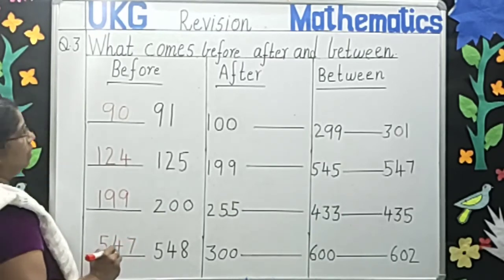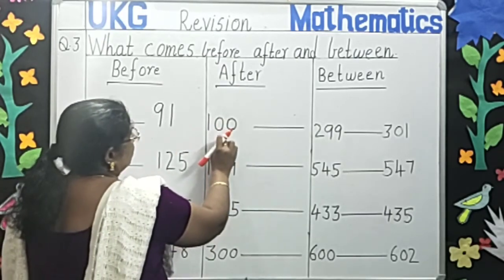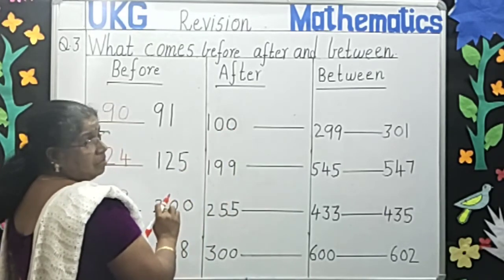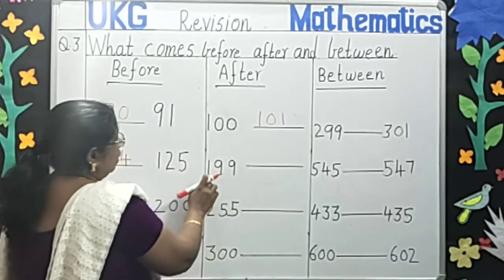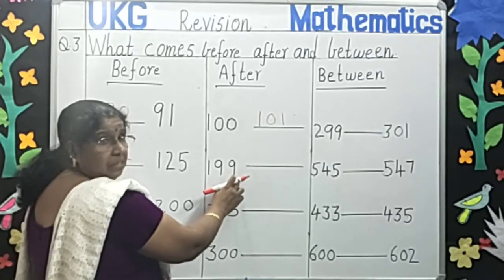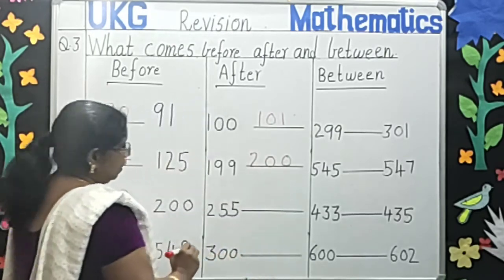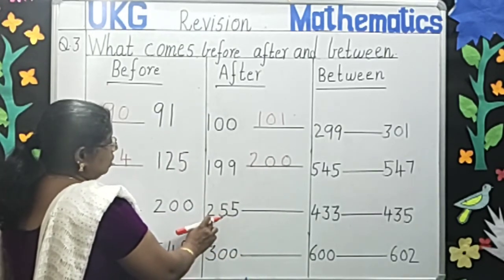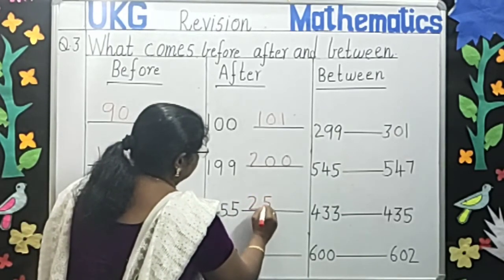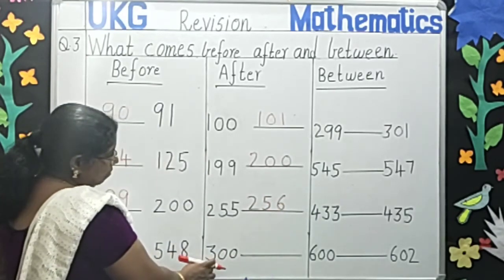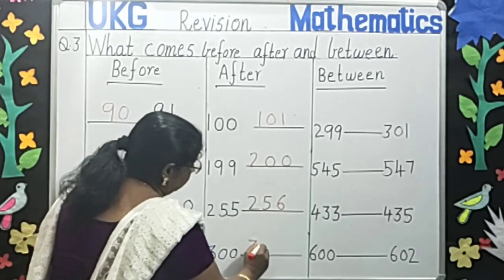Now we will do what number comes after. What comes after one hundred? Very good, one hundred and one. One hundred and ninety-nine after? Very good, two hundred. What number comes after two hundred and fifty-five? Two hundred and fifty-six. What number comes after three hundred? Yes, three hundred and one. Very good.